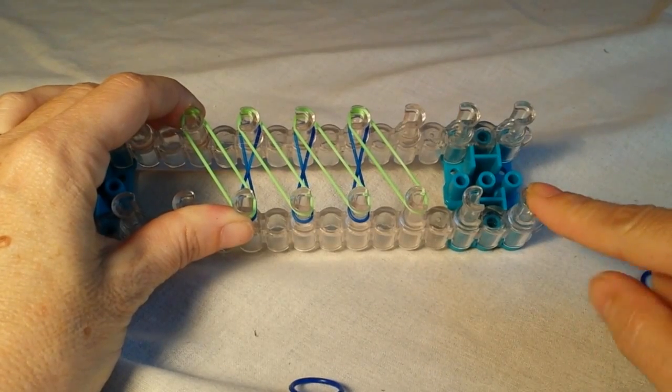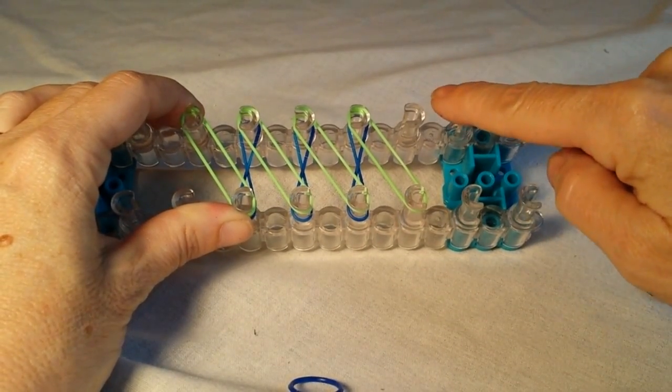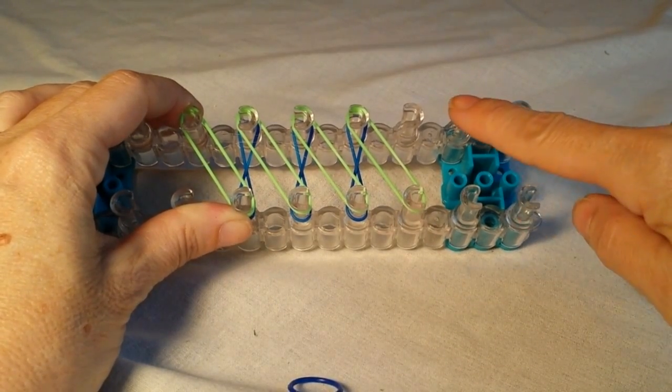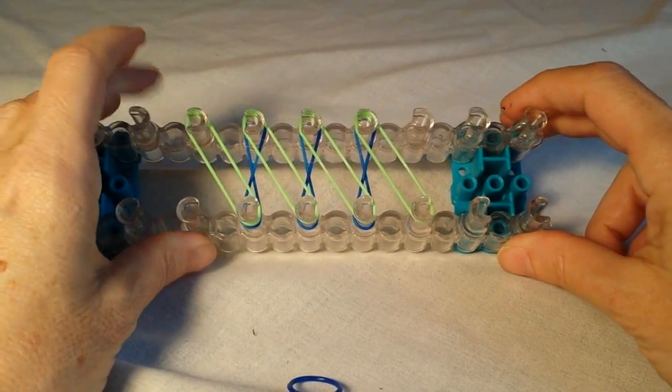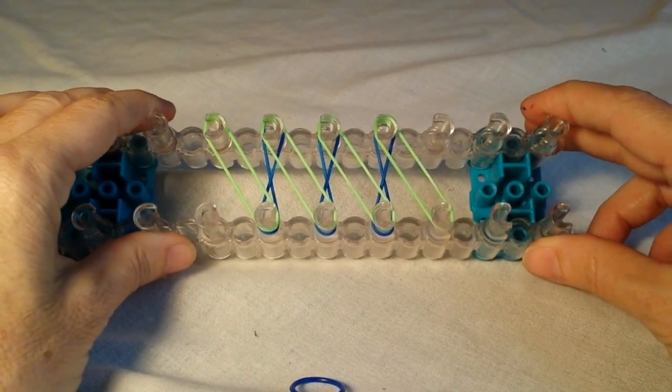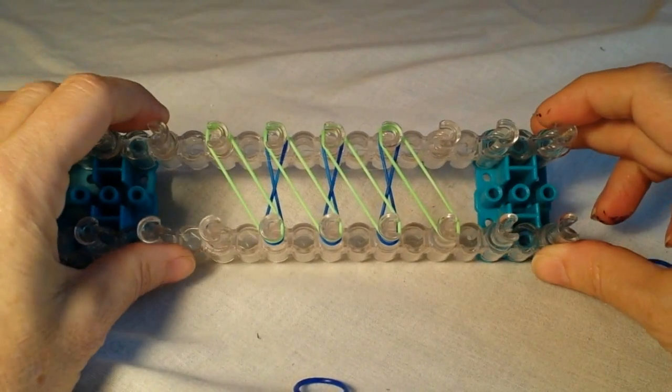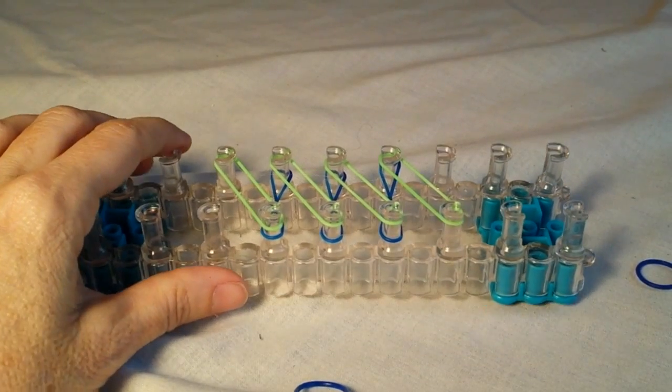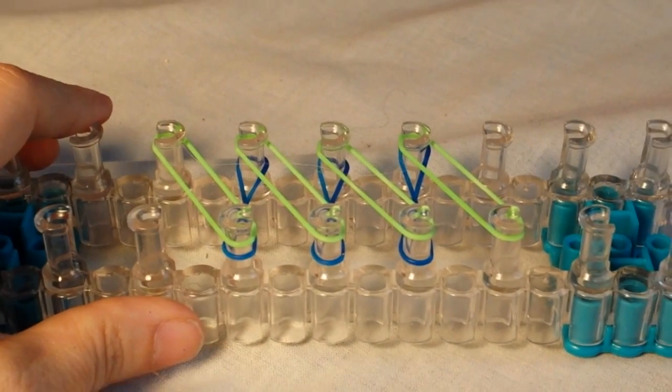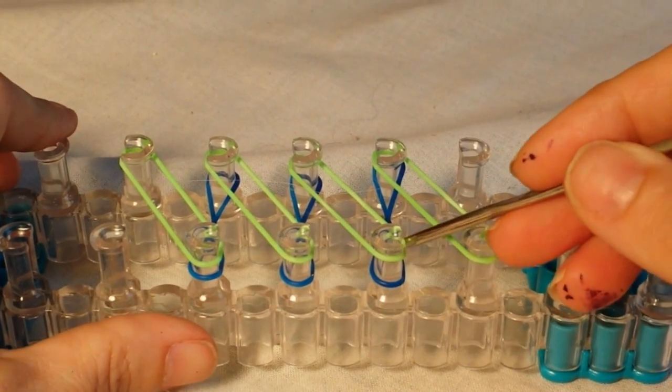Because if you're doing diagonal, you would start here and go in. So you need this extra set of pegs to start your diagonal if you're doing the full loom.